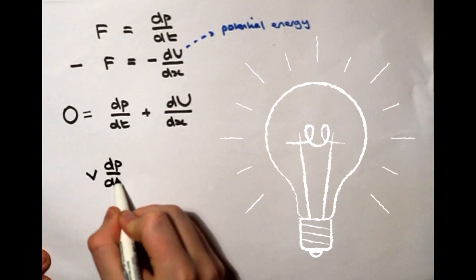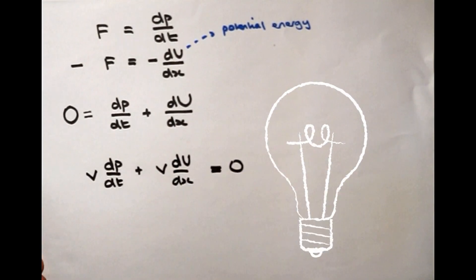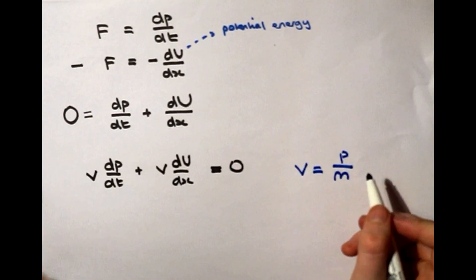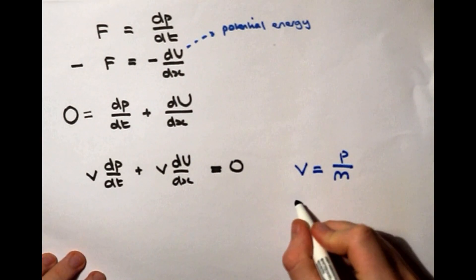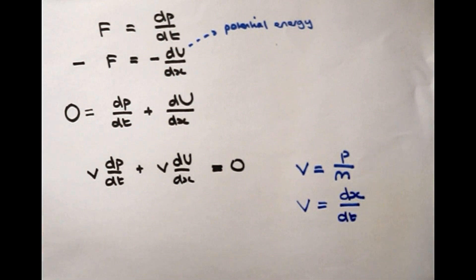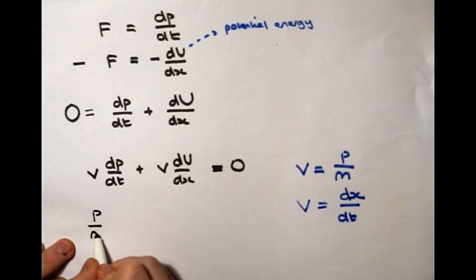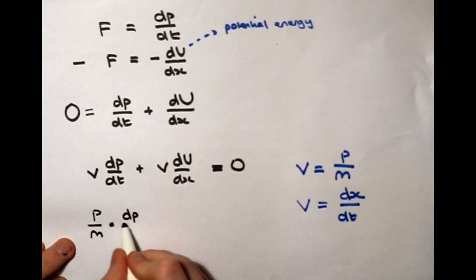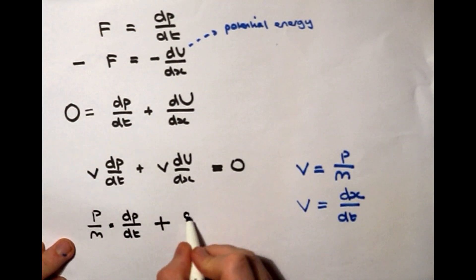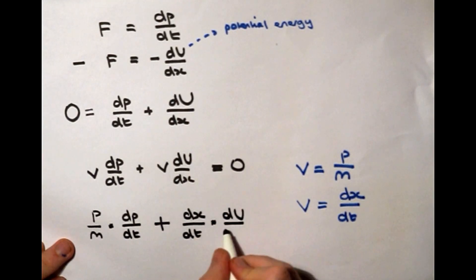At this point, we have to have the clever idea of multiplying the equation by velocity and then recalling the two velocity equations: velocity of momentum over mass, and that velocity is the derivative of position with respect to time. We can then get, by replacing the velocity terms, the following equation.